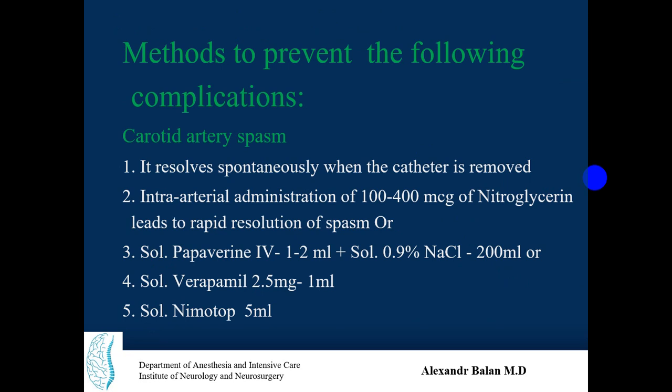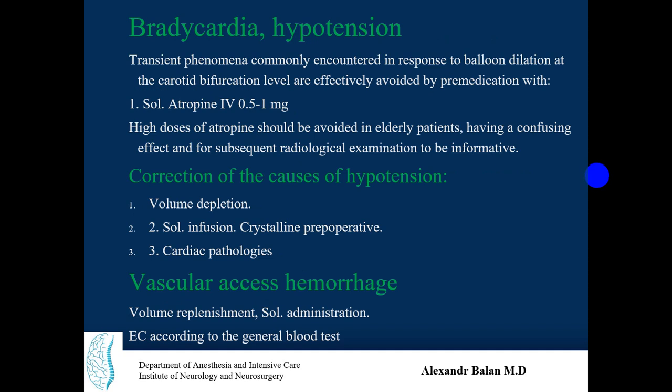Bradycardia and hypotension are transient phenomena commonly encountered during balloon dilation and after stent placement at the carotid bifurcation. They are effectively prevented by premedication with atropine at a dose of 0.5 to 1 mg. High doses should be avoided in elderly patients due to a confusing effect, and doses above 3 mg can produce agitation making the patient uncooperative.